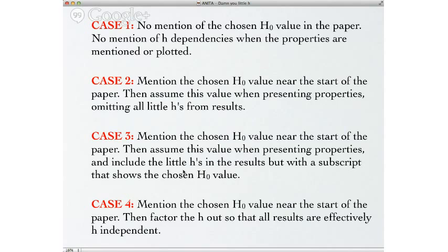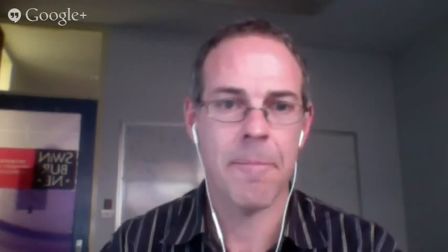Case two: there's mention of little h or H-naught at the start, but they assume a value when presenting properties and show no little h's from that point on. For example, Schawinski 2010 and Peng 2010 — both very nice, well-cited papers using zCOSMOS and Galaxy Zoo/Sloan data — state their H-naught at the start and then drop all references. The Peng paper says 'we use H-naught of 70' at the start, then just plots log mass and number densities per megaparsec cubed without further mention. That's fine, as long as you propagate everything correctly.